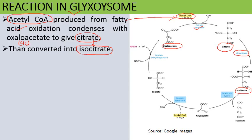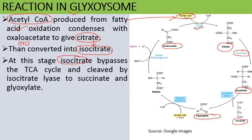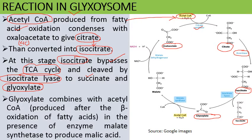Here isocitrate is cleaved or broken down into succinate, a four-carbon acid, and glyoxylate, a two-carbon compound. At this stage isocitrate bypasses the Krebs or TCA cycle and is broken down by the enzyme isocitrate lyase. Then glyoxylate combines with acetyl coenzyme A — also a two-carbon compound produced by beta-oxidation of fatty acids — with the help of enzyme malate synthase, forming the four-carbon acid malic acid or malate.